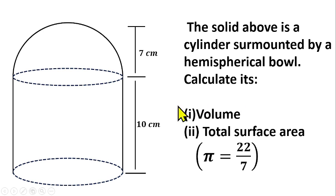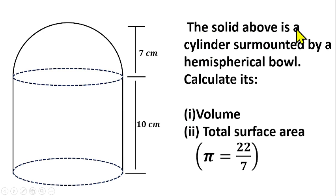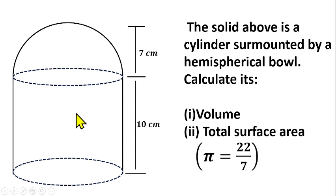In the previous video we solved a question related to this — that was when a cone was mounted upon a cylinder. But in this video we have a solid where a cylinder is surmounted by a hemispherical bowl. We have to calculate the volume and the surface area of this solid shape.